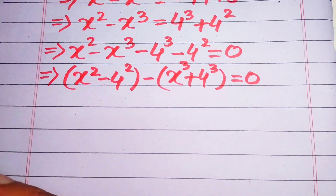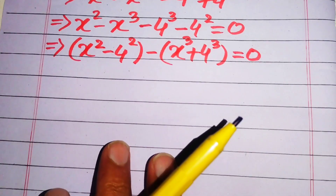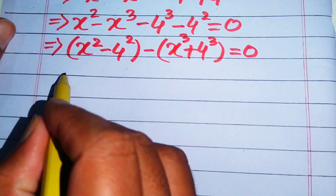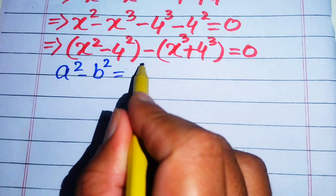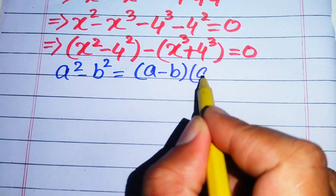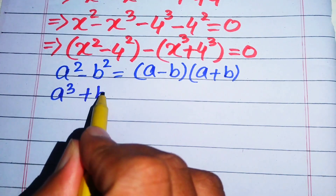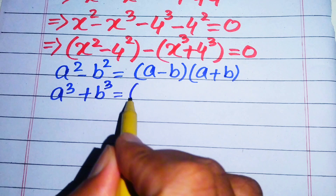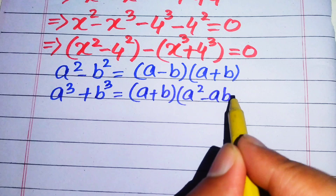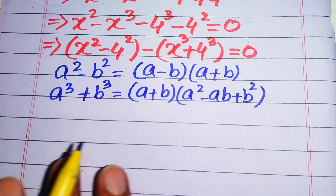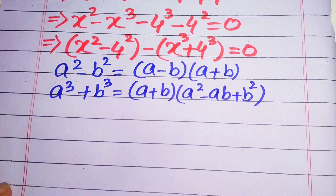Here we need two algebraic formulas. The first is the square identity: a squared minus b squared equals a minus b times a plus b. The second is the cubic identity: a cubed plus b cubed equals a plus b times a squared minus ab plus b squared. We need these two formulas to solve our equation.